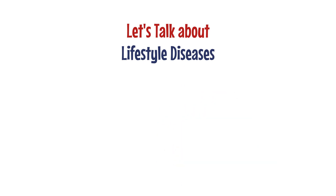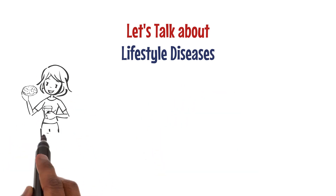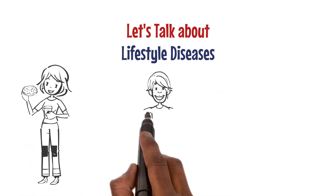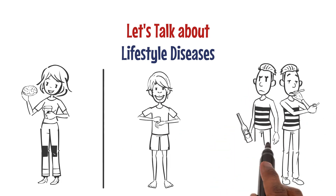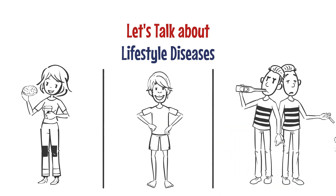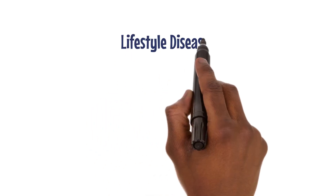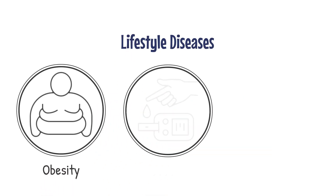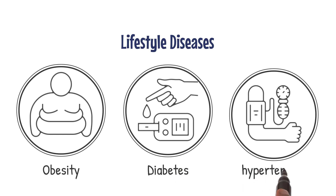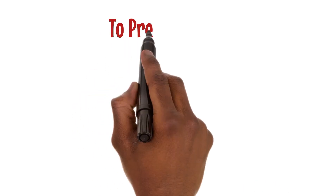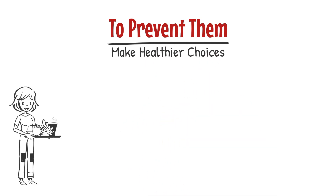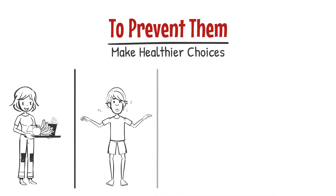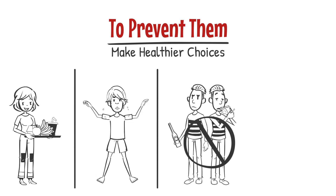Lifestyle diseases are not contagious but are caused by our daily choices, such as what we eat, how much we exercise, and whether we smoke or drink. Lifestyle diseases like obesity, diabetes, and hypertension can lead to serious health problems. To prevent them, make healthier choices: eat balanced meals, exercise regularly, avoid smoking and alcohol, and manage stress.